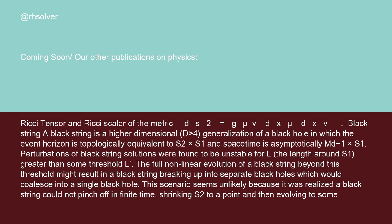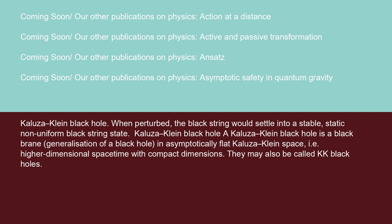A black string is a higher dimensional (d > 4) generalization of a black hole in which the event horizon is topologically equivalent to S² × S¹, and spacetime is asymptotically M_(d−1) × S¹. Perturbations of black string solutions were found to be unstable for l, the length around S¹, greater than some threshold l. The full non-linear evolution of a black string beyond this threshold might result in a black string breaking up into separate black holes which would coalesce into a single black hole. This scenario seems unlikely because it was realized a black string could not pinch off in finite time — shrinking S² to a point and then evolving to some Kaluza-Klein black hole. When perturbed, the black string would settle into a stable static non-uniform black string state.